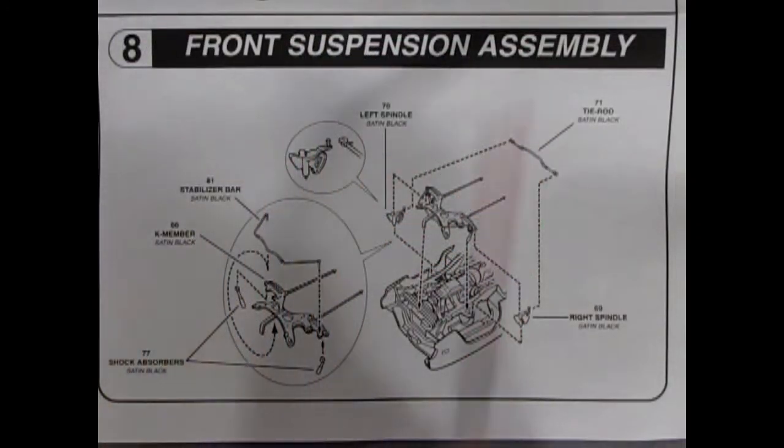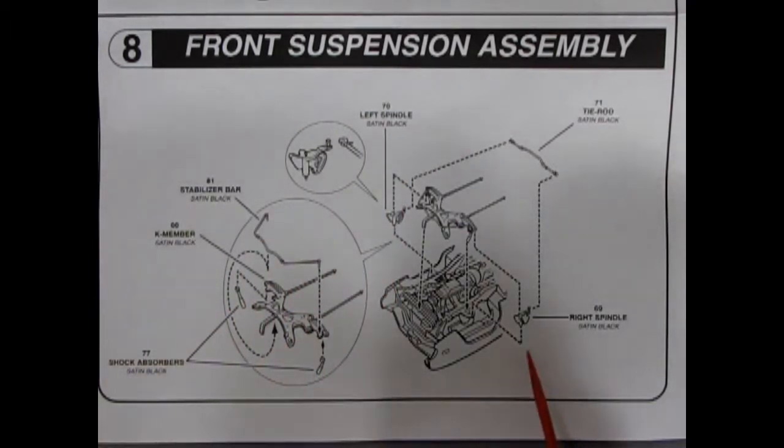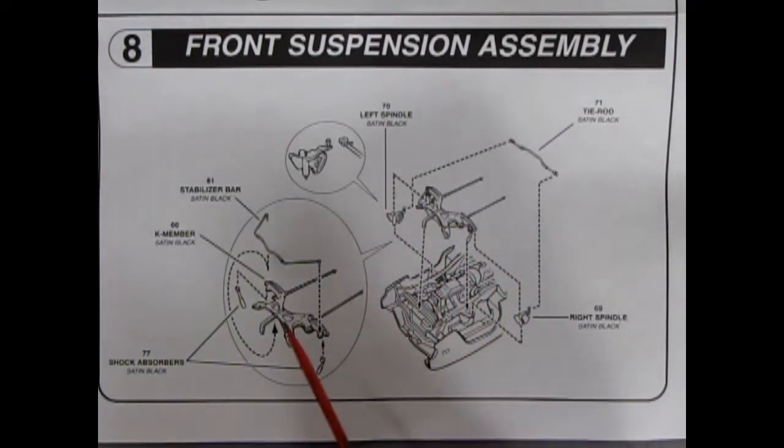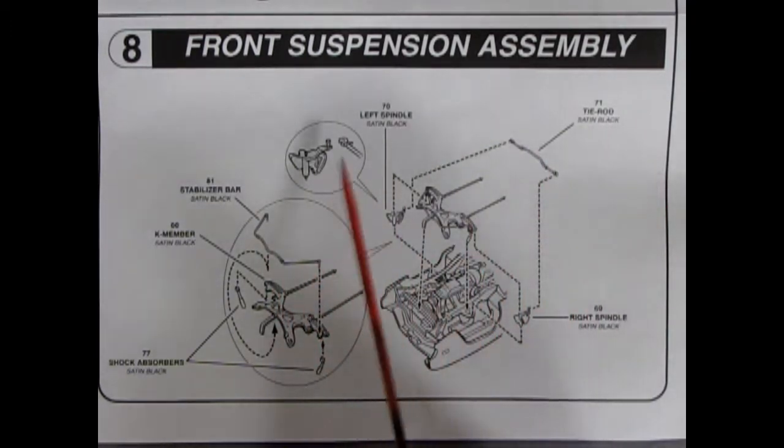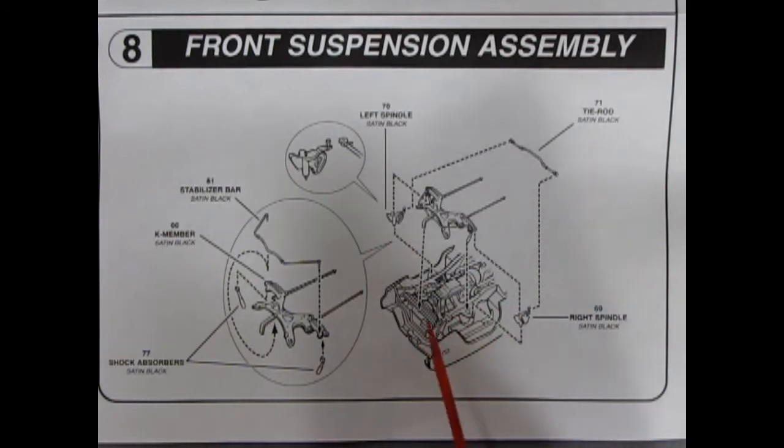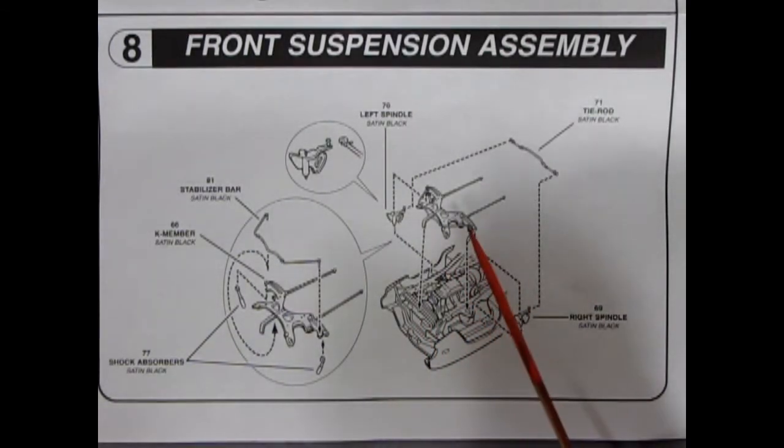Panel eight is our front suspension assembly and this has poseable wheels. So you get right and left spindle, you get this, which is a K-member, pardon me, stabilizer arm, a tie rod, and that all pops together. The shock absorbers go in and then you have your poseable steering. This of course is torsion bar suspension, which was a wound up spring inside these tubes.